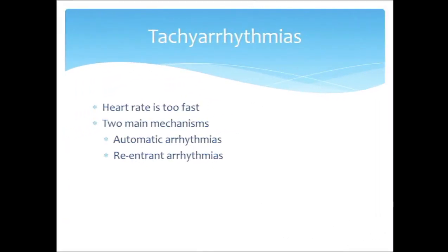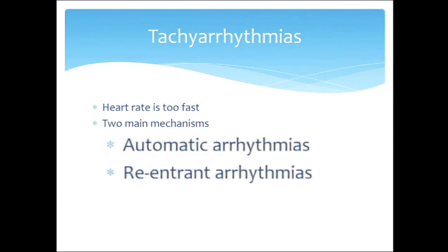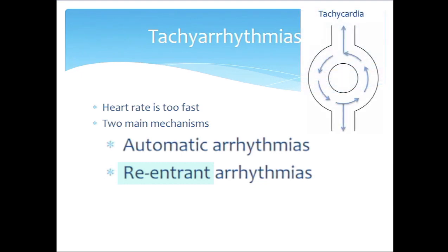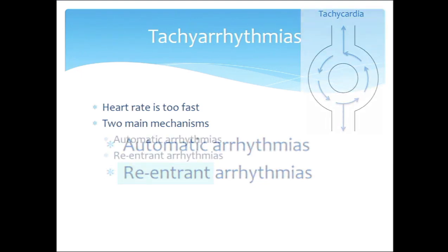Let's talk about tachyarrhythmias — a scenario where the heart rate is too fast. You can think of tachyarrhythmias as having two main mechanisms. You can have something called an automatic tachycardia, where an area of tissue within the myocardium is firing rapidly. Or you can have something called a reentrant arrhythmia, which is a scenario where you have a region within the myocardium that is able to support a circular, snake-chasing-its-tail type of electrical loop.